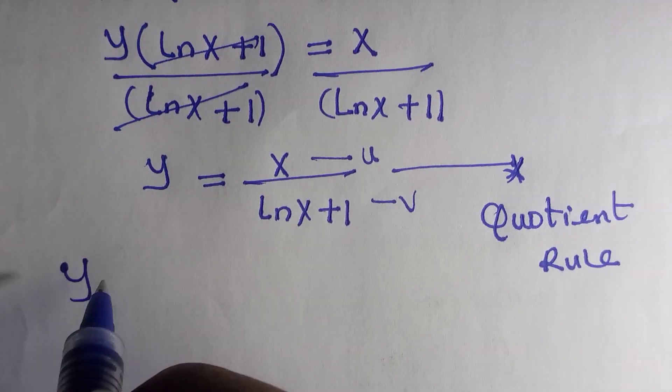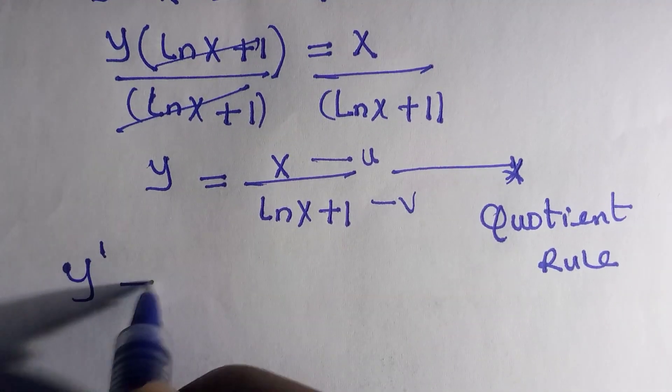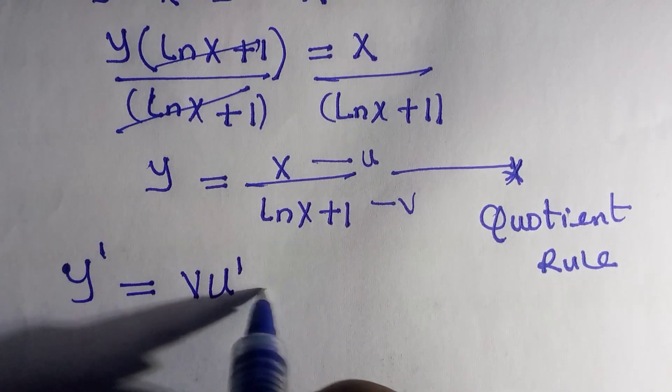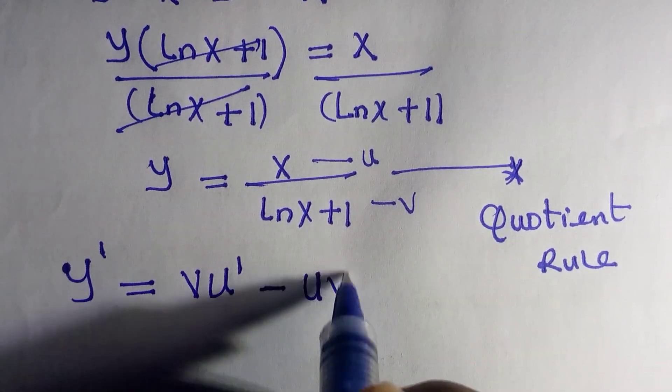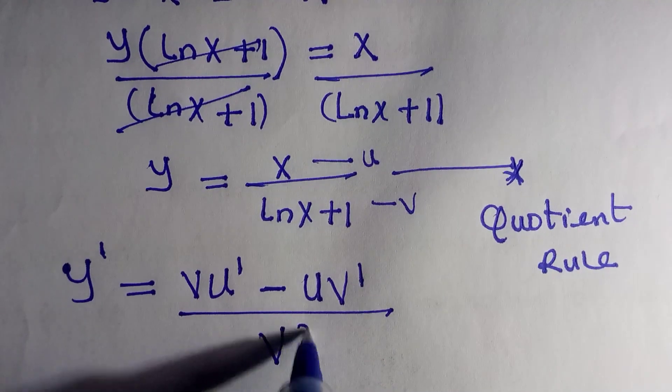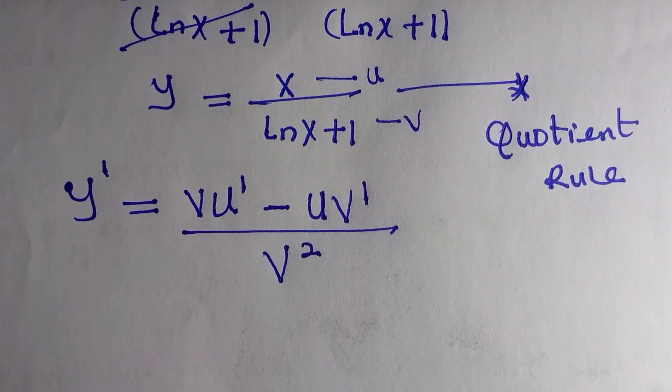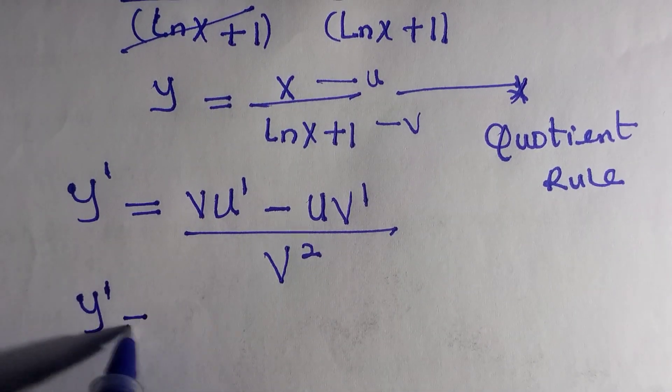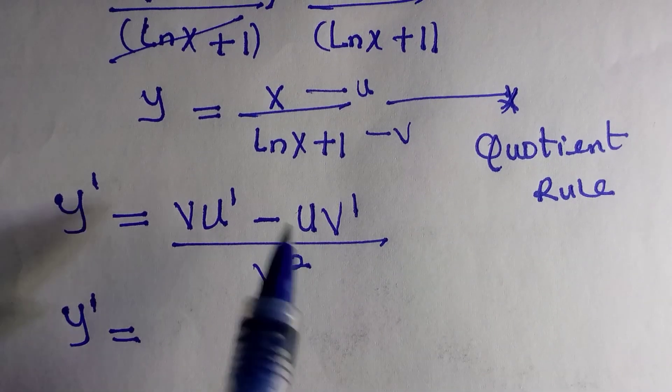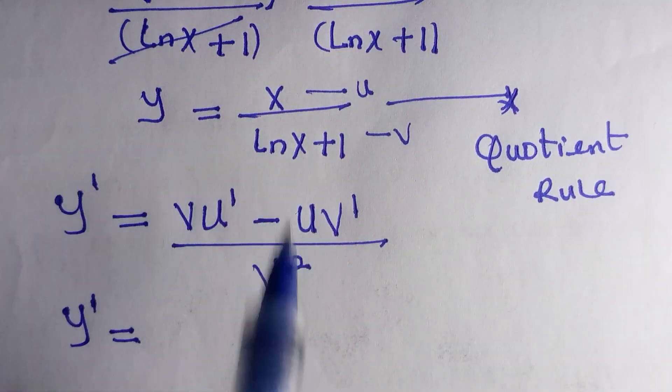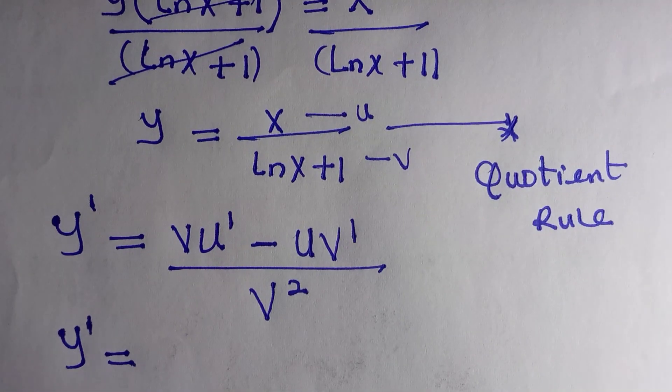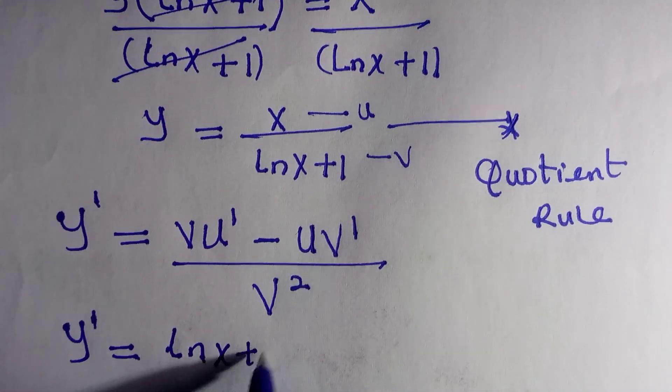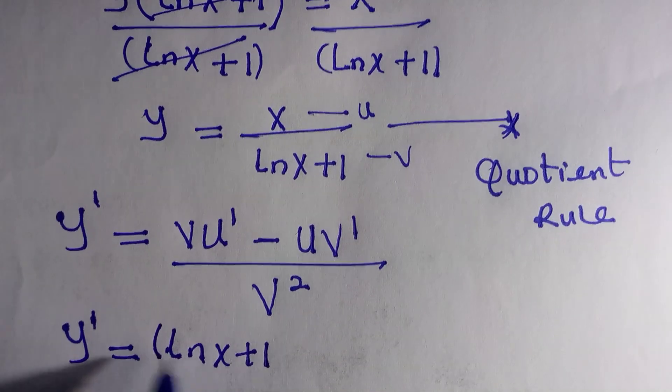But what does quotient rule state? If you have y prime written equals to, we keep v, we differentiate u, minus, then we keep u, we differentiate v, all divided by v squared. And if you have y prime equals to, what is v? The v here is ln of x plus 1, and by writing it we have ln of x plus 1, then we bracket it.